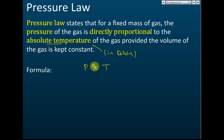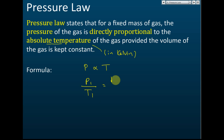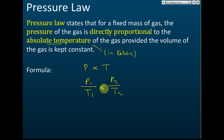The requirement is that the volume of the gas remains constant — the volume cannot change. Since P is directly proportional to T, the formula is P1 over T1 equals P2 over T2. You could also write it as P1 over P2 equals T1 over T2 — it's the same relationship.